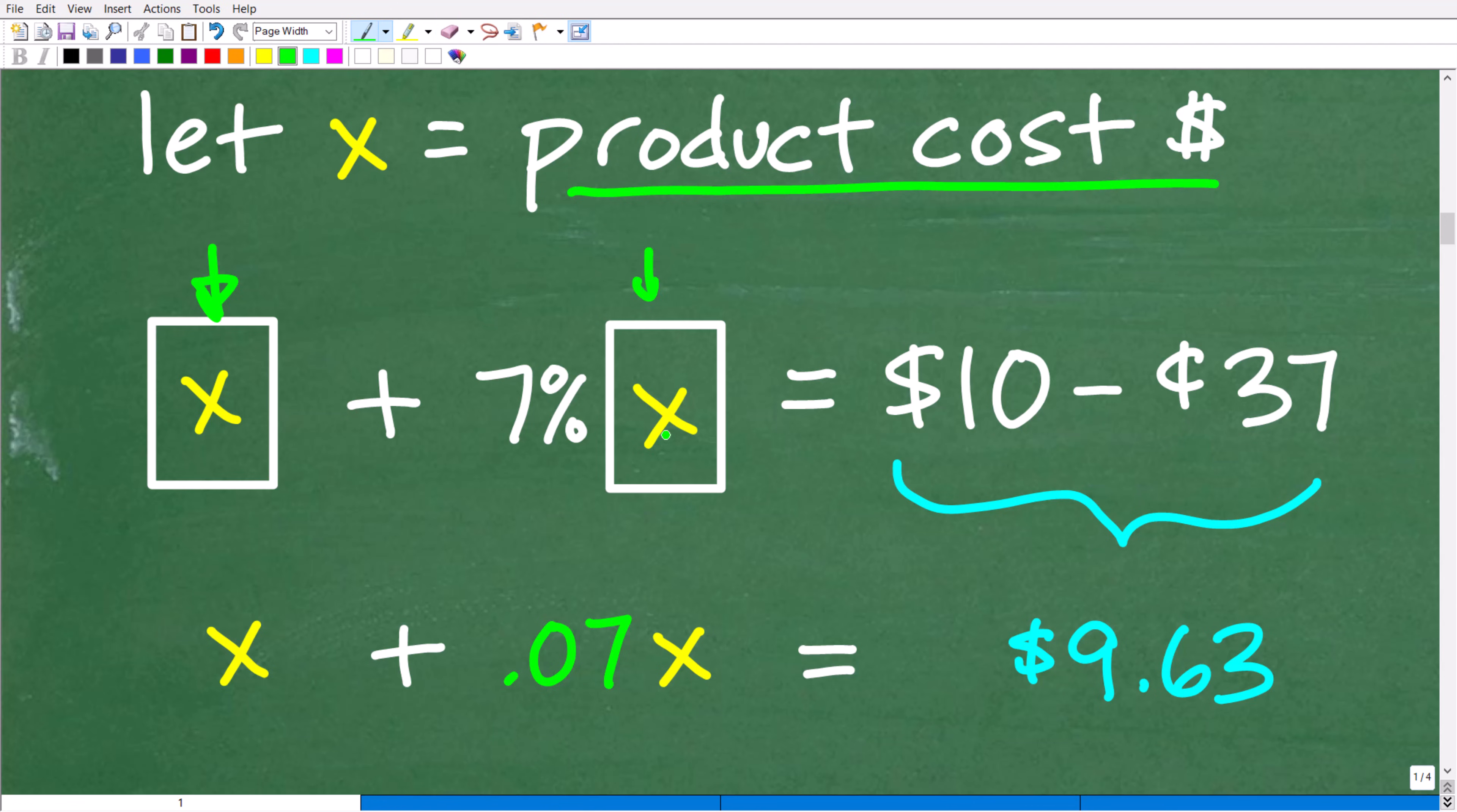So we're going to take 7% of the cost of the product. Now, of course, that's now X. And that's going to be equal to the difference of our change. We got back $0.37, but we gave the cashier $10. So how much did this actual transaction cost?